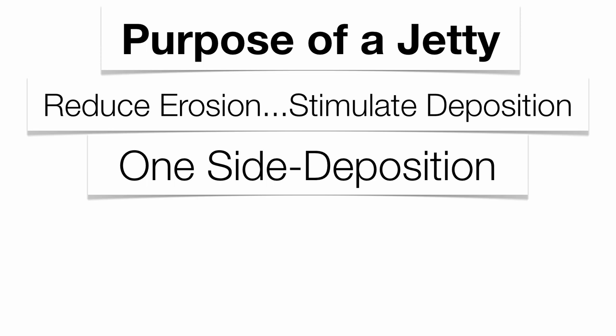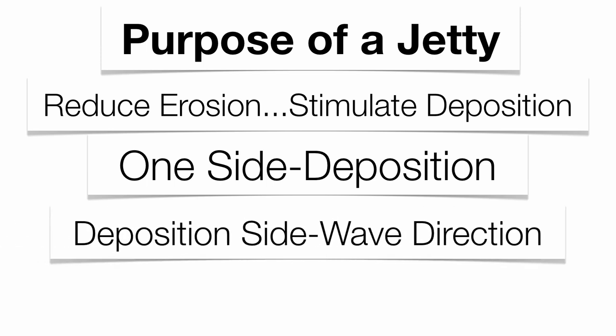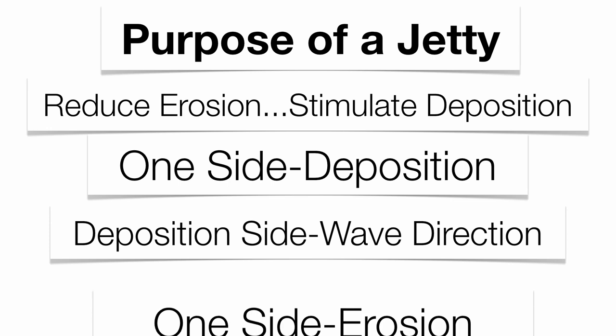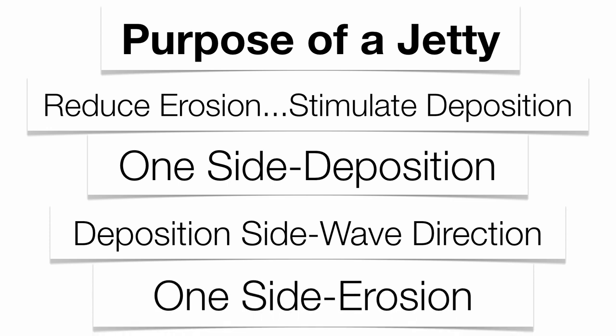That leads us to the purpose of a jetty. Jetties are going to be put out in the water to stimulate deposition. So one side of your jetty you're going to get deposition, and the other side you're going to get a little bit of erosion. The side of the jetty that gets deposition is the side that tells you where the waves are coming from. If the left side is built up more than the right side, the waves are coming in from the left. If the right side is built up more, then waves are coming in from the right.